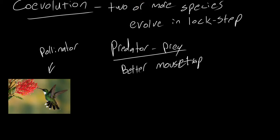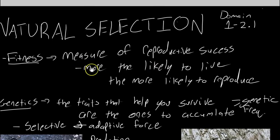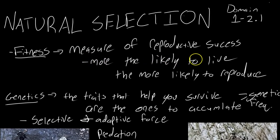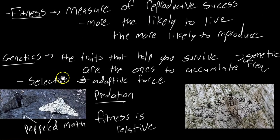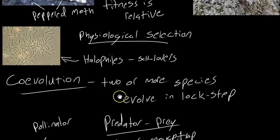Well, that concludes natural selection as an evolutionary force. Be sure you understand that natural selection is all about fitness, and it's how reproductively successful you are. If you have success, that means your genetics is going to allow those traits to accumulate, and you overall change the genetic frequency. And that natural selection is a selective and adaptive force. A great example of natural selection include predation, physiological selection, and coevolution. There's many more out there, and if you have any questions, be sure to ask and let me know. I appreciate it. See you next time.